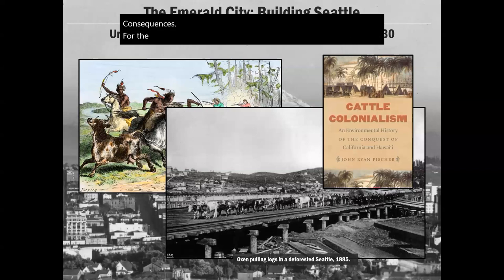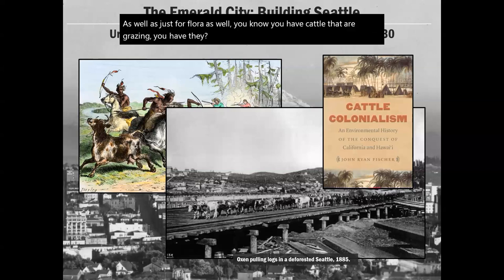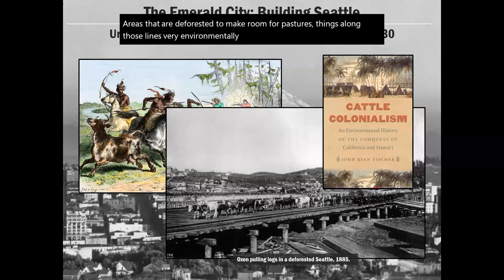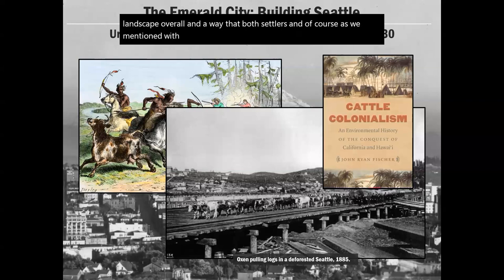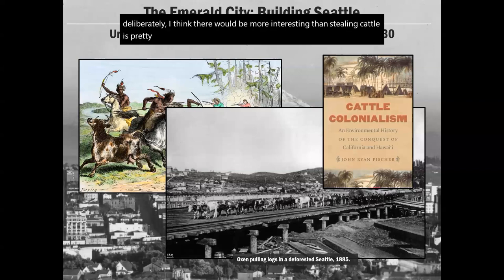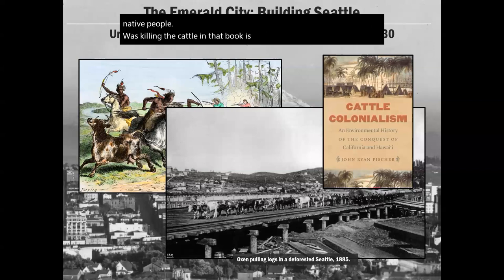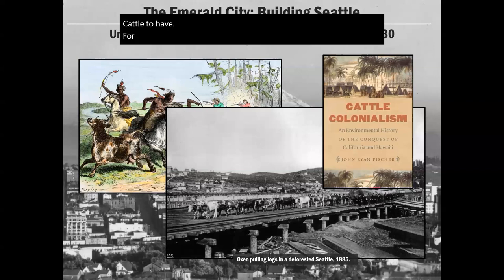Fischer emphasizes the degree to which settlers transformed the landscape to accommodate cattle — how they ideologically related to them, and how cattle replacing and killing off predators had ecological consequences for the region, as well as consequences for flora through grazing and deforestation to make room for pastures. This was massively transformational for the landscape overall. Interestingly, Native people killing cattle showed that they understood how central cattle were to the viability of the settler colony.